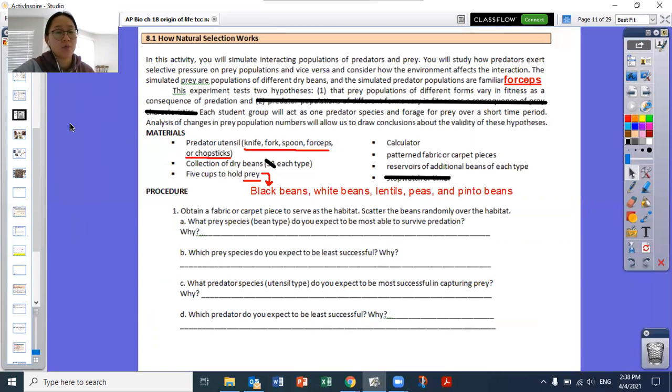The lab activity that we'd be working on would have been how natural selection works. And this would be like a really fun lab to do in person since we'd be pretending to be predators and eating prey. So originally in this activity, you will simulate interactions of populations of prey and predators. You will study how predators exert selective pressure on prey populations and vice versa. And consider how the environment affects the interaction. The simulated prey are populations of different dry beans. And the simulated predator populations are familiar forceps. And there's going to be different versions of these forceps or these tools that you pick up things with.